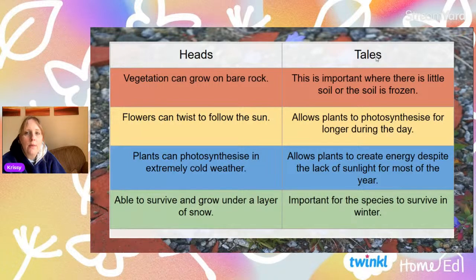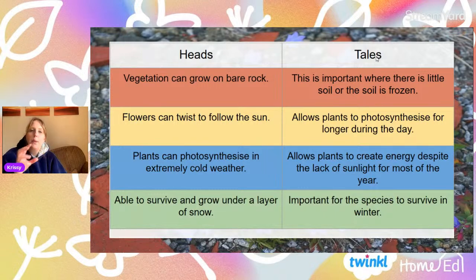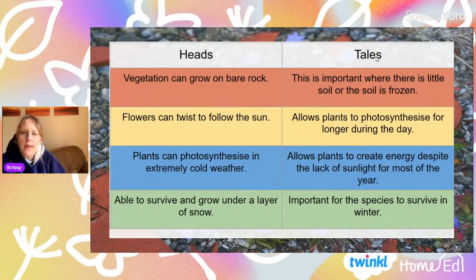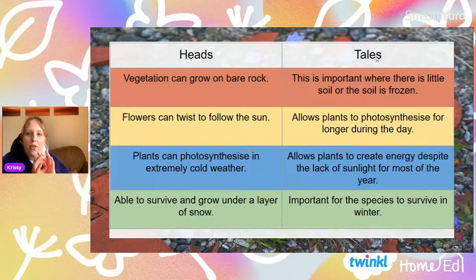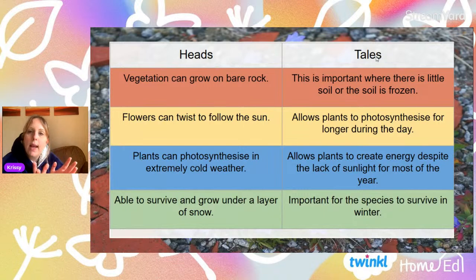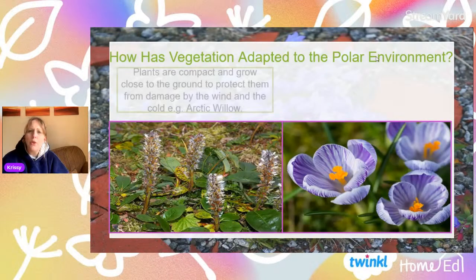They're able to survive under a layer of snow so that when that snow drops and those ice sheets come back, it allows that species to survive over the winter, even if they're dormant. Like our deciduous trees — they're dormant during the winter but still alive, losing all their leaves and storing energy in their trunk. Or like daffodil bulbs: they're not dead under the ground, they're still alive, and then they grow their stems and flowers when spring comes and it starts to warm up. These plants are able to survive and some even grow under a layer of snow, which is absolutely incredible.